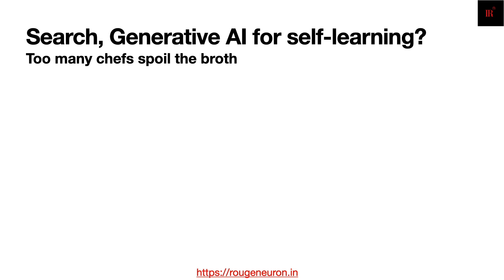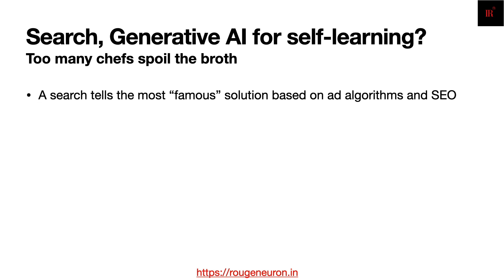They don't pay attention to the accuracy of sources from where that code is coming — does it really solve the problem? Search-based generative AI tools seem like a solution, but they are just tools and you need to be better than that. Search basically tells you the most famous solution based on ads algorithms or SEO, which is search engine optimization. They are completely agnostic of what problem you are solving.